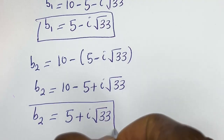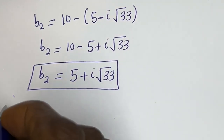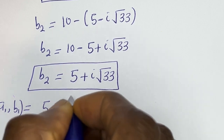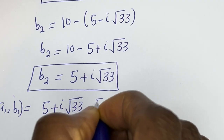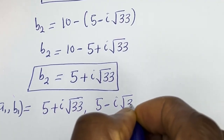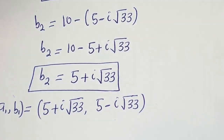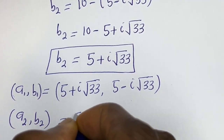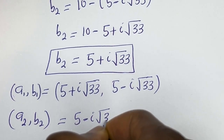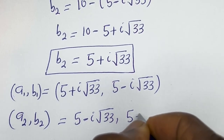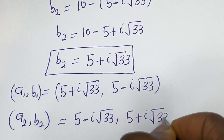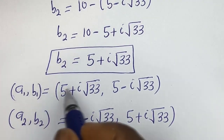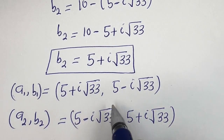Therefore our final answers are: a1, b1 equals 5 plus i root 33 and 5 minus i root 33; and a2, b2 equals 5 minus i root 33 and 5 plus i root 33. You can see that the value of a1 is equal to the value of b2, and the value of b1 is equal to the value of a2. We may check to confirm if this answer is right or wrong.